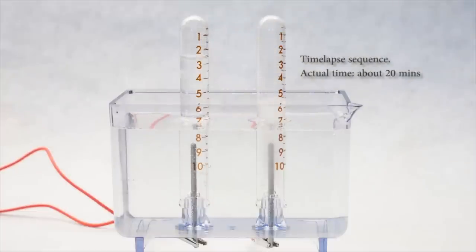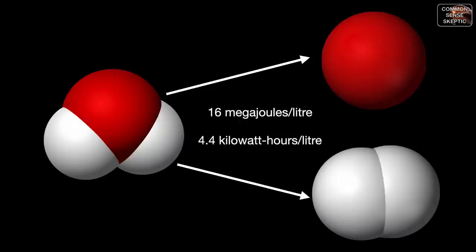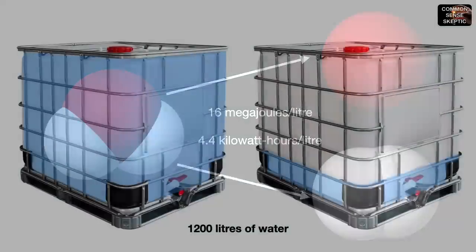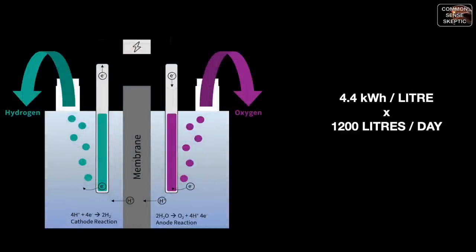The question is how much energy is needed to force the two hydrogen atoms away from the oxygen atom in the water molecule. The system requires 260 kilojoules of energy per mole of water, putting the energy requirements to split a liter of water into the two gases at 16 megajoules or 4.4 kilowatt-hours. 1200 kilograms — or 1200 liters — of water need to be electrolyzed daily, so 4.4 kilowatt-hours times 1200 kilograms is 5280 kilowatt-hours, or 5.280 megawatt-hours.